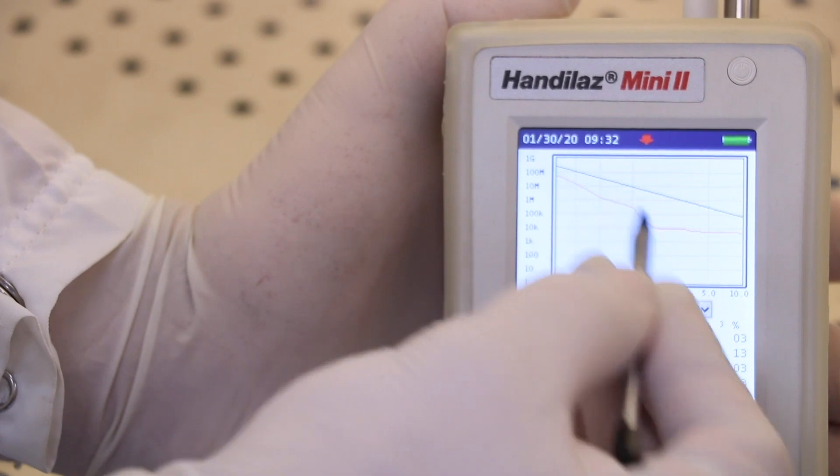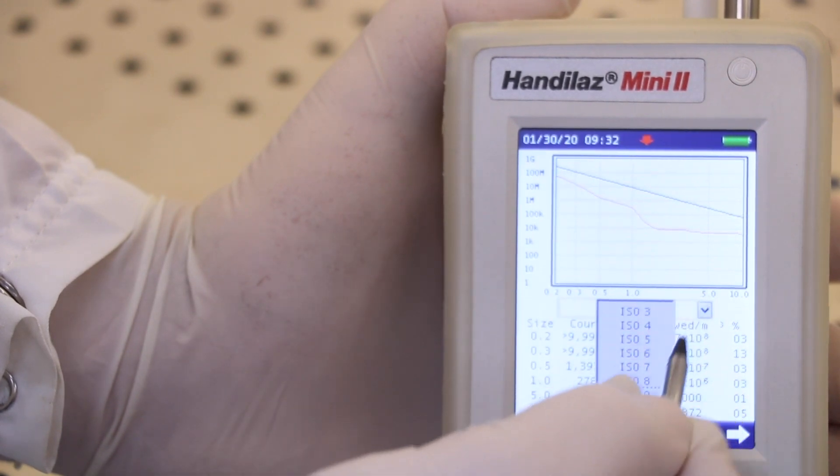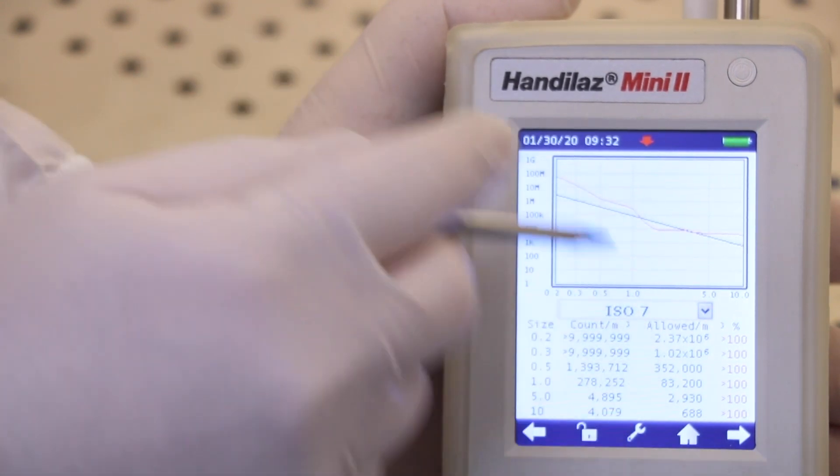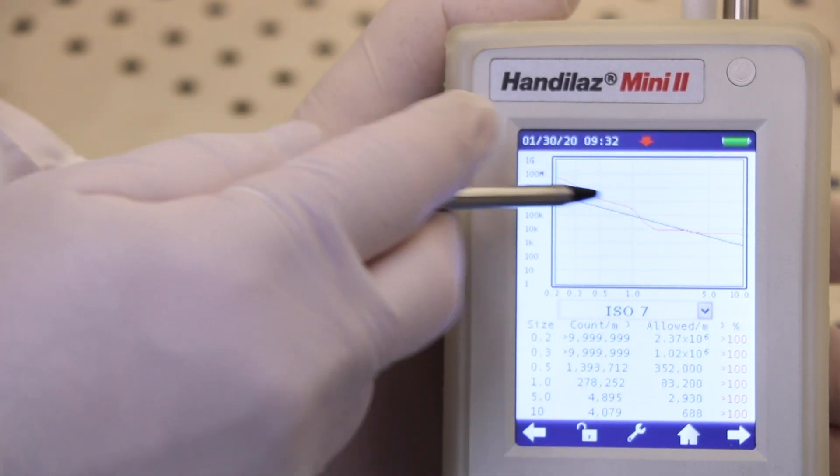But do we meet a cleaner spec? Let's see. We'll use the same data and select ISO class 7. Now the red line is largely above the threshold limit, and all the percentages relative to the particle size exceed the limit.